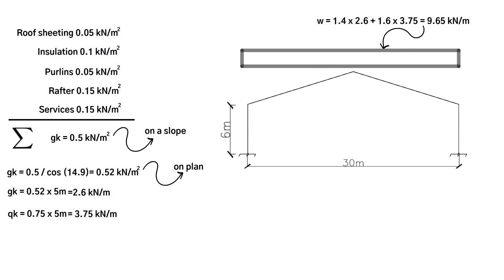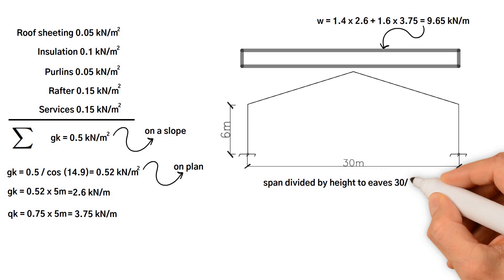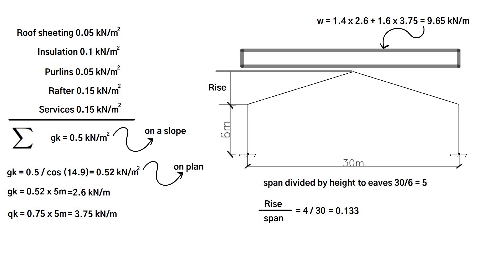To use the graphical method, four parameters are required. Span divided by height to eaves equals 30 over 6, which equals 5. Rise over span equals 4 divided by 30, which equals 0.133. Vertical load WL equals 9.65 kilonewton per meter times 30 meters, which equals 290 kilonewton. WL squared equals 9.65 kilonewton per meter times 30 meters squared equals 8,685 kilonewton meter.